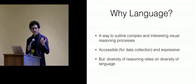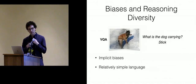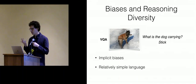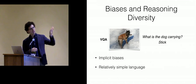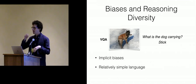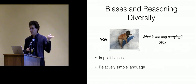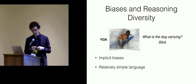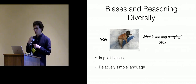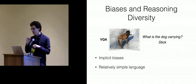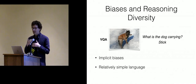However, the diversity of the reasoning we get from language really relies on the diversity of the language in our data. This has been getting increasing attention over the last two years, and can be divided into two problems: implicit biases in the dataset, and relatively simple language in the dataset. I'm using VQA here as an example, but this repeats across many language and vision datasets. Each modality is a backdoor to different types of biases, and our models are really good at capturing these biases and giving us what looks like high performance, but without really understanding the problem.